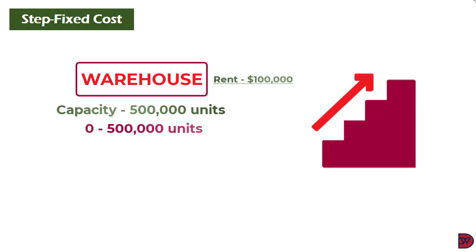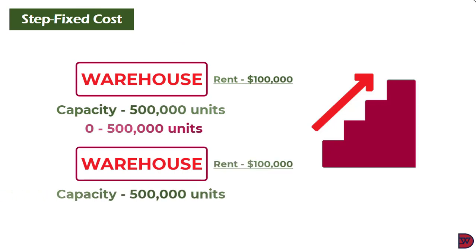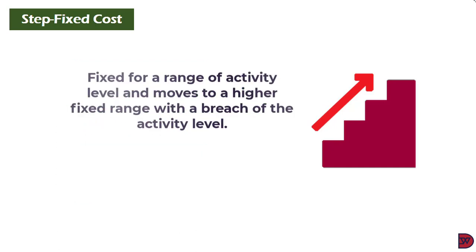With step fixed cost, the moment you move outside the 500,000 capacity of the warehouse, you incur additional cost which is also fixed for a particular group of activity. If you move to 600,000 units, you need a second warehouse, bringing another rent. So your fixed cost moves from 100,000 to 200,000. That's what step fixed cost means — it is fixed for a certain level of activity.